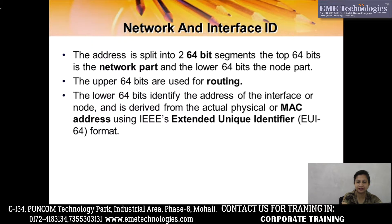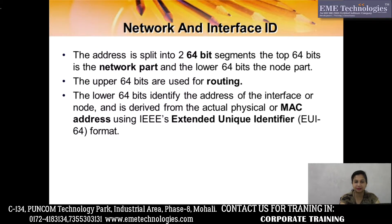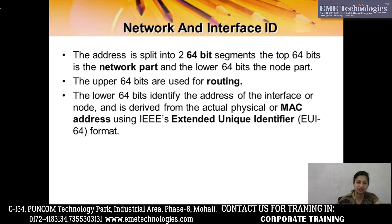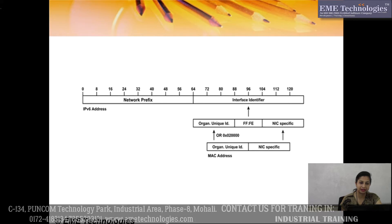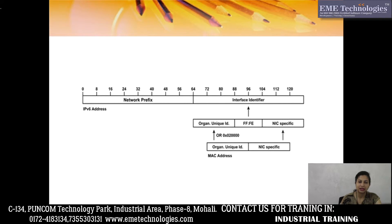Let's see how the IPv6 network and interface ID work. The 128 bits are divided into two halves of 64 bits each. The first 64 bits are the upper segment used for routing, meaning network path selection. The lower 64 bits are used to identify a particular device, forming the interface ID.